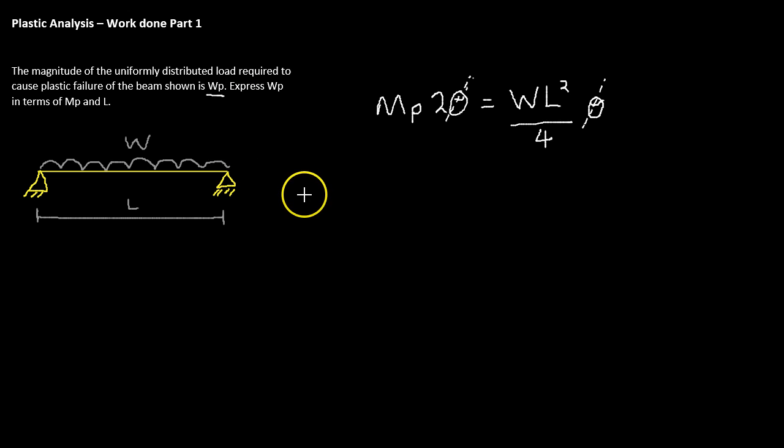As we said, WP is the load required to cause plastic failure of the beams. So, if we substitute WP in for W now and we rearrange to make WP our subject, we can say that WP is equal to 8 MP over L squared. And that's the answer to our question.